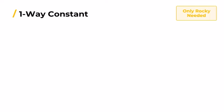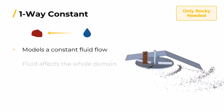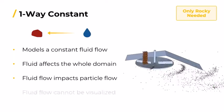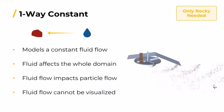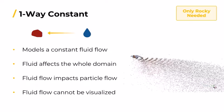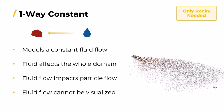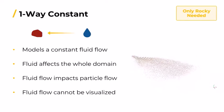Starting with the one-way constant method, which simulates how a constant fluid flow affects particle motion in Rocky. It is useful in cases where you have a known, unchanging fluid flow and want to understand how it impacts the flow of particles without having to use a separate CFD software.